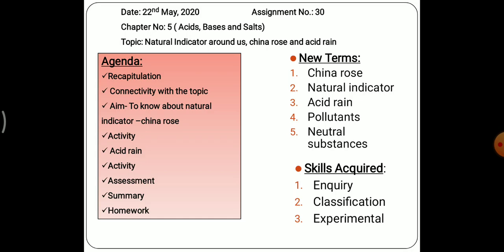First we will discuss today's agenda. First, we will recapitulate what we did yesterday, then we will connect with our topic. We will derive our aim, which is about the natural indicator China rose, then do one activity related to China rose indicator to find out whether a substance is acidic or basic. Then we will study the causes and effects of acid rain on the environment, and then assess what we have learned today.